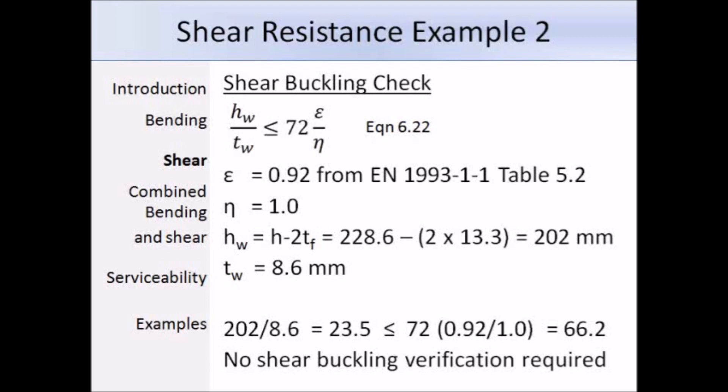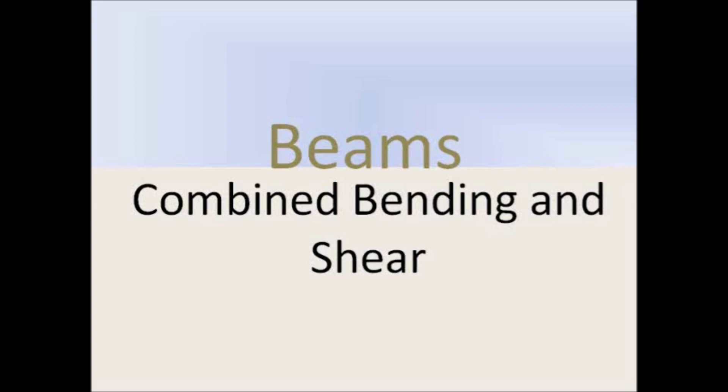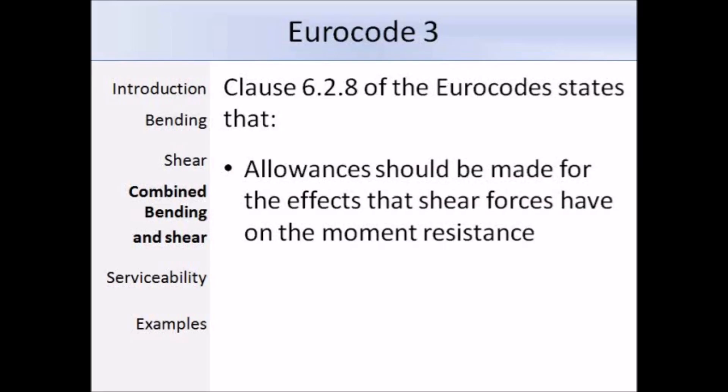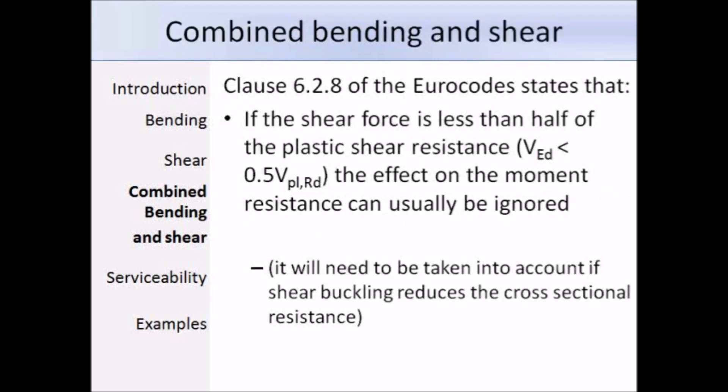We've just finished covering shear and we've already covered bending. This next section will briefly go through combined bending and shear. In Eurocode 3, Clause 6.2.8 states that allowances should be made for the effect that shear forces have on the moment resistance and this is because if shear is present, the plastic moment of the section is reduced. Clause 6.2.8 also states that if the shear force is less than half of the plastic shear resistance, so V_ED is less than 0.5 of V_pl,Rd, the effect on the moment resistance can usually be ignored. But you should also note that it would need to be taken into account if the shear buckling reduces the cross-sectional resistance.